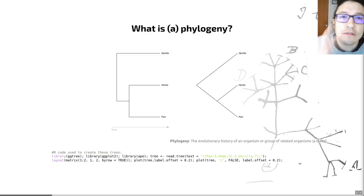A phylogeny, and you can see two examples on this slide here, is the evolutionary history of an organism or a group of related organisms. That would be a clade. We can see a phylogeny here of us and our closest relatives. There's us, chimpanzees, and gorillas.